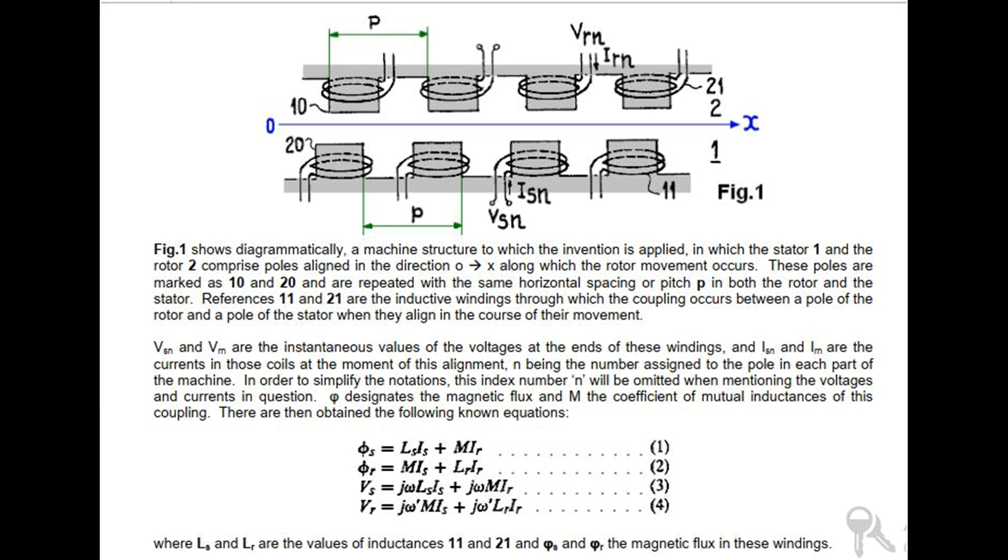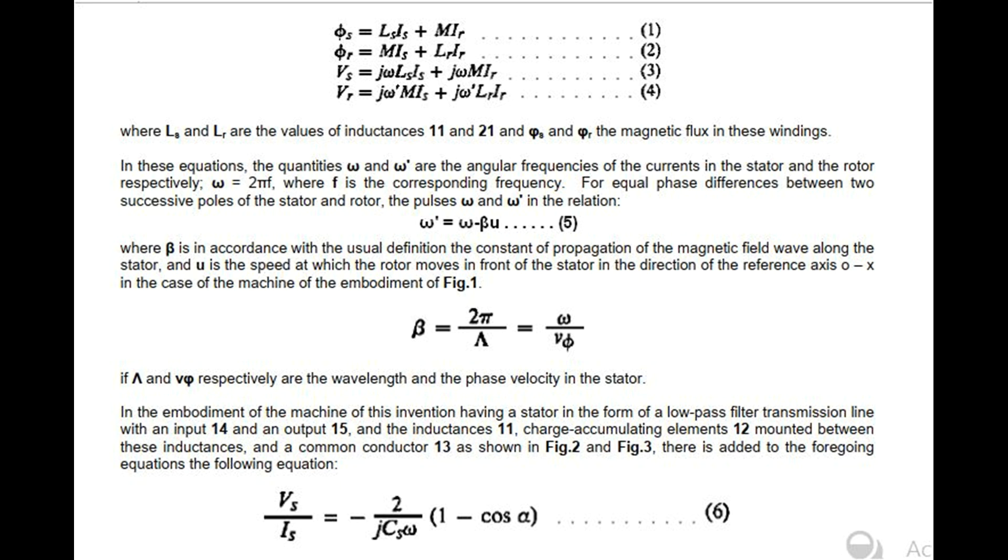There are then obtained the following known equations, where LS and LR are the values of inductances 11 and 21, and phi-S and phi-R are the magnetic flux in these windings. In these equations, the quantities omega-S and omega-R are the angular frequencies of the currents in the stator and the rotor, respectively, equal to 2πF, where F is the corresponding frequency. For equal phase differences between two successive poles of the stator and rotor, the pulses omega-S and omega-R satisfy the relation omega-S = beta U + omega-R, where beta is in accordance with the usual definition the constant of propagation of the magnetic field wave along the stator, and U is the speed at which the rotor moves in front of the stator in the direction of the reference axis O-X.